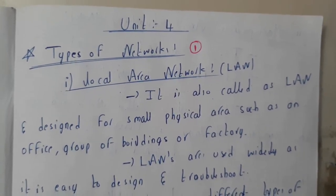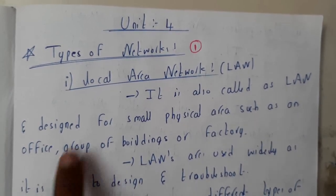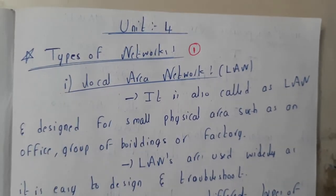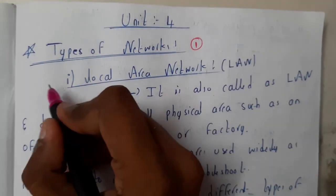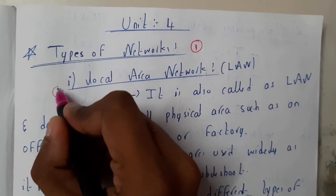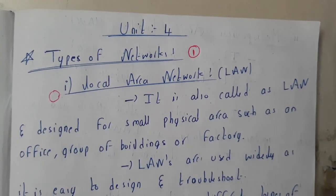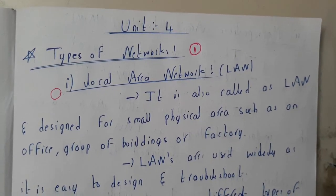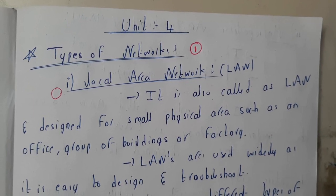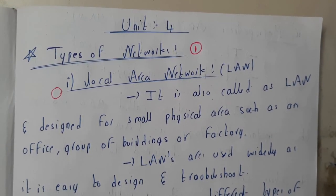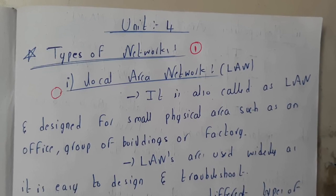The full form of LAN is Local Area Network. From the name we can say 'local' means a particular small region. This network is used in a smaller area like your room, your house, your office, or a small college. All these devices will be connected and you will be using them within that local area.